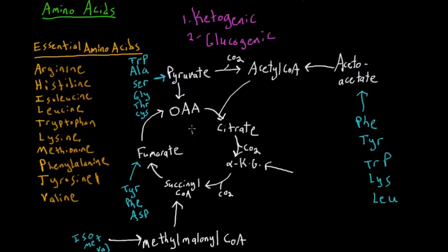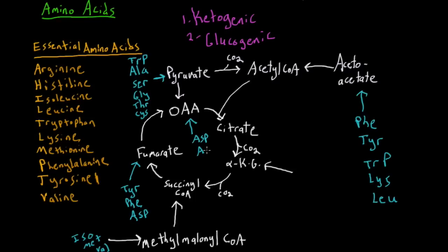We can turn into oxaloacetate with aspartate and asparagine. And finally, we can turn into alpha-ketoglutarate, first through glutamate, but also by breaking down other amino acids into glutamate, including proline, arginine, and histidine.